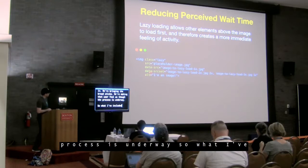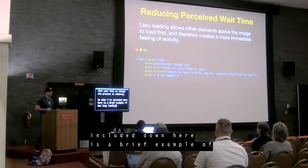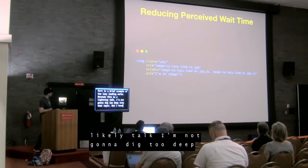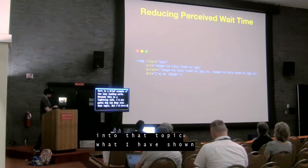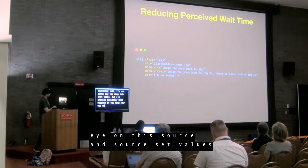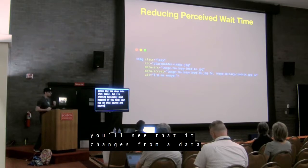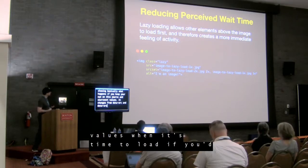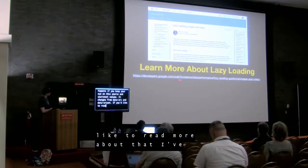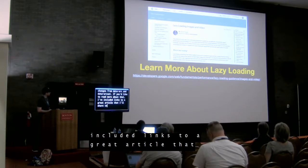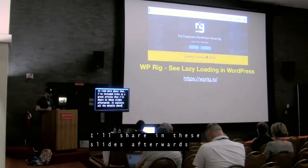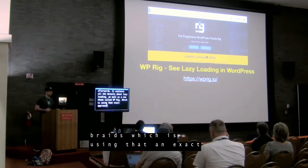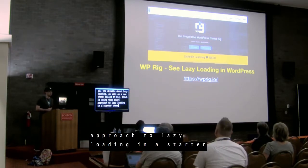We haven't actually changed the makeup of the image by using lazy loading, but we're allowing other things to come into frame and make the user feel as though things are loading faster — bringing in the salad, the breadsticks, making that user feel a process is underway. I've included a brief example of how lazy loading works. You'll see the source and source set values change from data-source and data-source-set to the actual values when it's time to load. I've included links to a great article I'll share in these slides afterwards, as well as a new theme called WPBread which uses that exact lazy loading approach as a starter theme for WordPress.